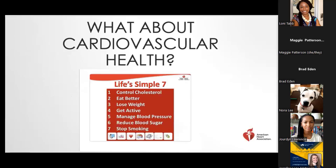For cardiovascular health, I tend to focus on Life's Simple Seven — it's actually called Life's Essential Eight now because it also includes sleep. There are seven metrics that the American Heart Association says we need to pay attention to at an individual level to improve our cardiovascular health outcomes: controlling cholesterol, eating better, losing weight, getting physically active, managing blood pressure, reducing blood sugar, and stop smoking.